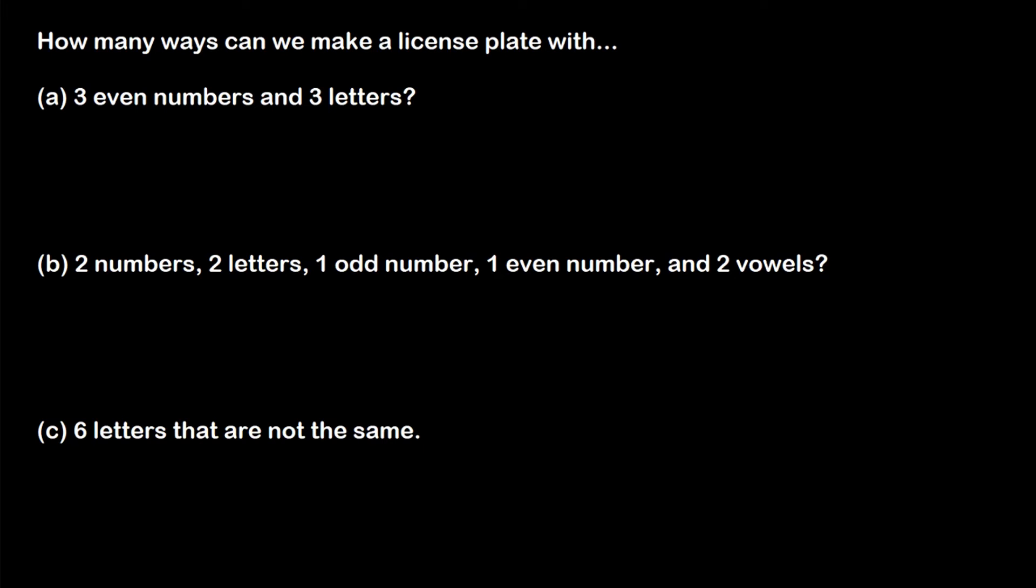Now, let's put this into an application. Let's say making license plates. So where I'm from, license plates consist of six symbols. Three of them are numbers, and three of them are letters. So let's say we have some restrictions on the types of things we can put on our license plates. So for example, we want our numbers to just be three even numbers, and then we want three letters. And we're not going to be too specific about where these letters and numbers show up. They just have to show up somewhere.